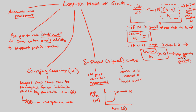These two ideas go hand in hand. On the early part of the curve, population growth rate is increasing. Later, it's decreasing. And finally, if N is equal to K — if you actually reach that carrying capacity — then the growth rate is equal to exactly zero.